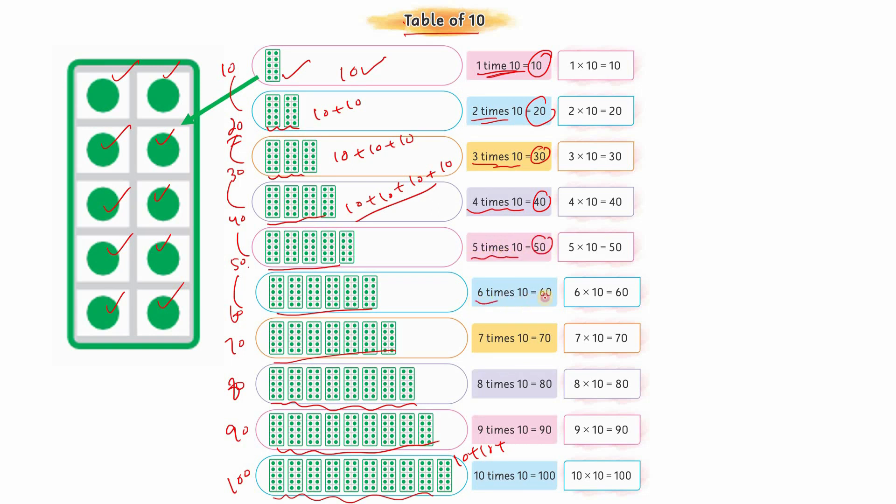Five times ten is fifty. Six times ten is sixty. Seven times ten is seventy. Eight times ten is eighty. Nine times ten is ninety. Ten times ten is one hundred. Did you observe one thing - the answers we were getting from addition are the same answers we're getting from the multiplication table.